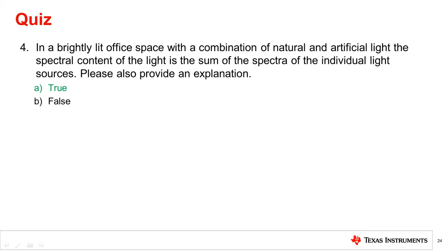While the relative spectral plots shown in this video cannot be directly added because they are normalized and so do not take into account differences in intensity between light sources, the actual spectral plots are measured in units of power per area on the y-axis. These plots can be directly added for each wavelength on the x-axis to create a combined spectral plot for both light sources. The non-normalized spectral plots will be introduced after we discuss units for measuring light in future videos.